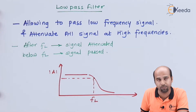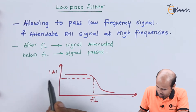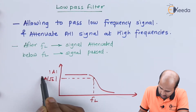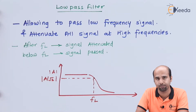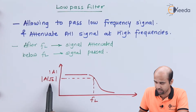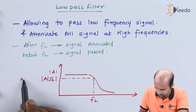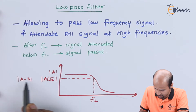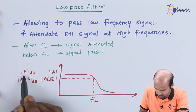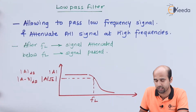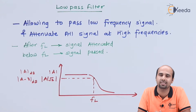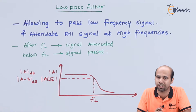At that particular value of FL, we are getting not exactly the maximum value of gain. This is nothing but A divided by root 2. This A divided by root 2 is not in dB. If we are taking in dB, it is nothing but A minus 3 dB. If A is the maximum value in dB, then at FL we get A minus 3 dB, meaning I am taking the value which is 3 dB less than the maximum value.